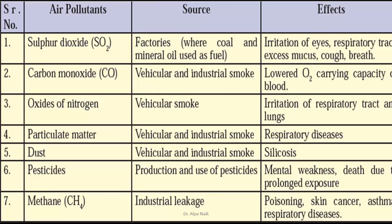Looking at air pollutants and their sources: carbon monoxide, oxides of nitrogen, particulate metals and dust are all caused by vehicular smoke. Sulfur dioxide comes from factories where coal and mineral oil are used. Pesticides come from their production and use. Methane comes from industrial leakage. The effects include irritation of eyes, respiratory tract problems, lower oxygen-carrying capacity, respiratory disease, mental weakness, poisoning, skin cancer and asthma.